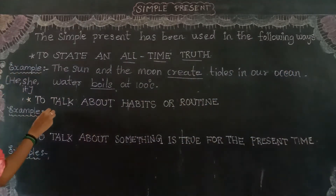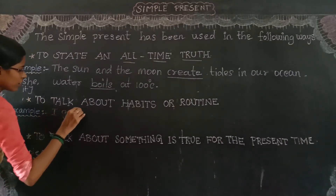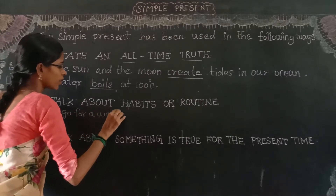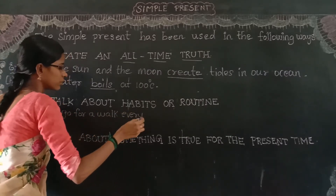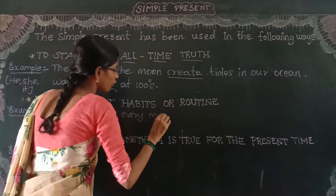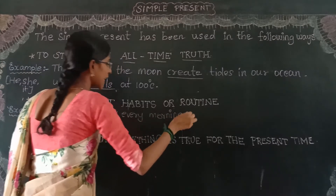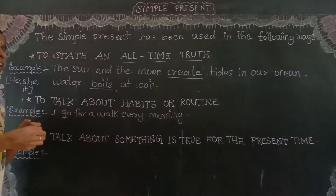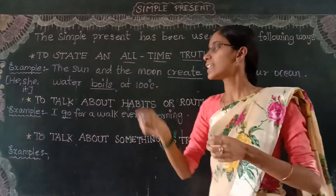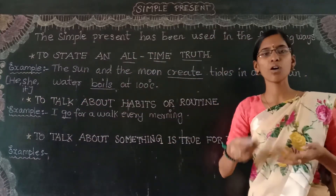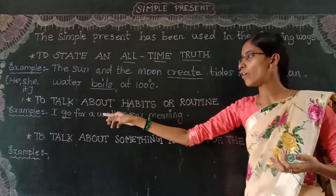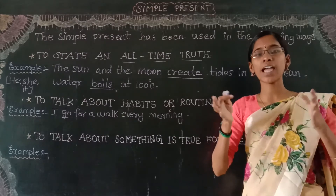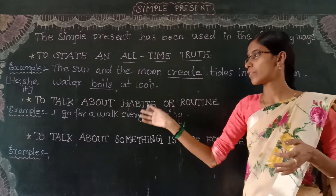See here: 'I go for a walk every morning.' The verb is 'go' in the present form because it is my daily habit — every day I go for a walk. So if you are referring to a daily habit or daily routine, you can use the simple present form.